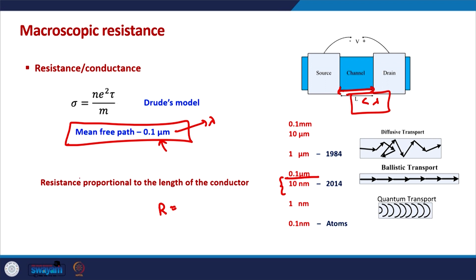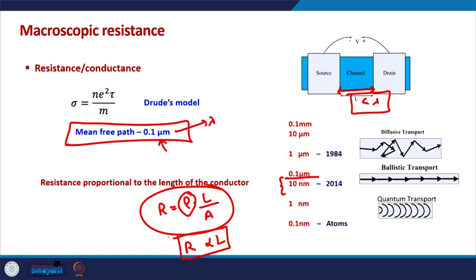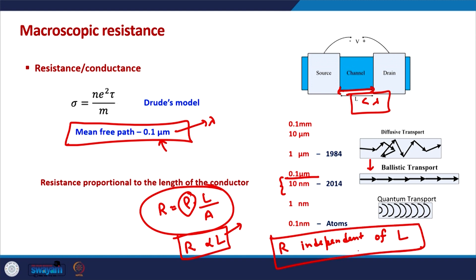According to Drude's understanding, resistance equals resistivity times length divided by area, where resistivity is a material parameter depending on mean time between collisions. As is clear from this expression, resistance is directly proportional to length. But what we will see in this course is that for ballistic transport, this is no longer true — the resistance is independent of length. That is a very interesting and fundamentally different result.